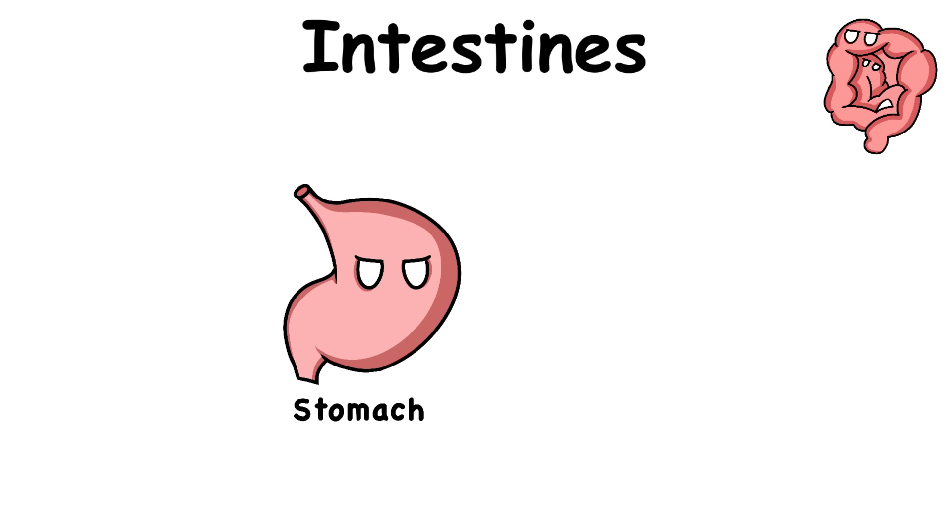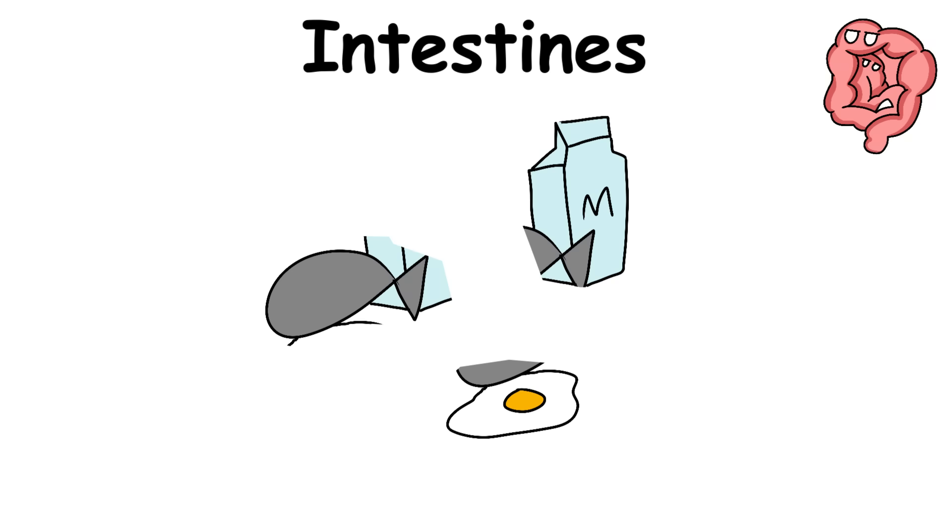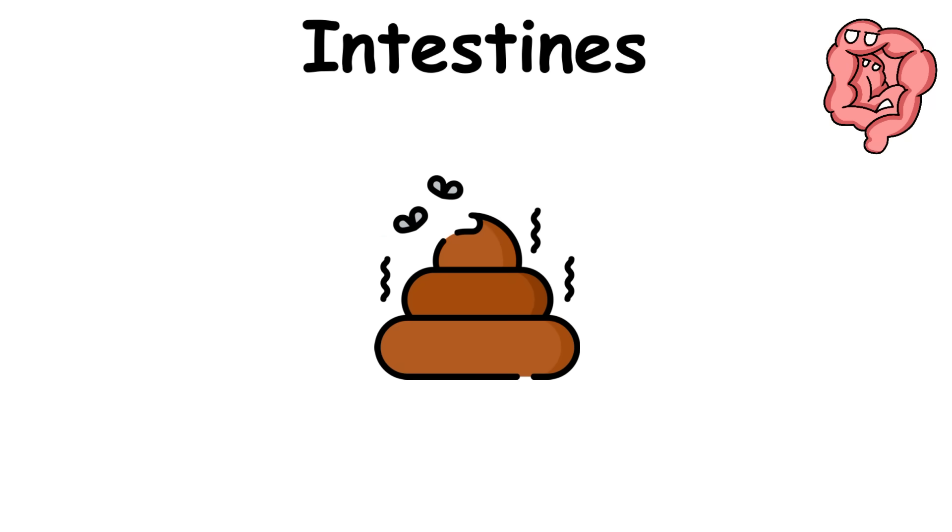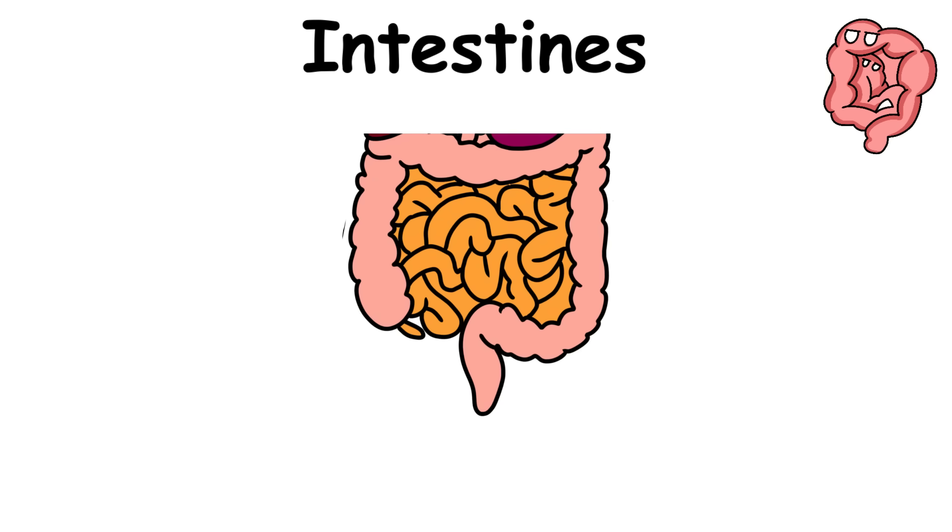The stomach is primarily responsible for breaking down and storing food before passing it to the small intestine. After food gets digested and broken down by the small intestine, it becomes feces or poop, which travels through the large intestine. The poop stops at the rectum before it gets ejected from the body through the anus, also known as the butthole.